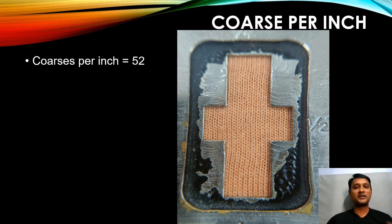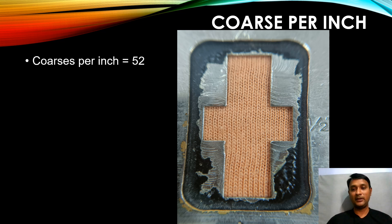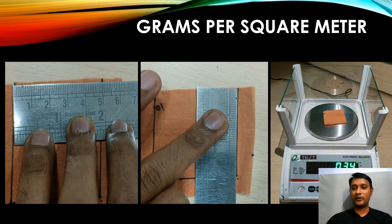The fourth parameter is courses per inch — the number of horizontal lines in one inch. Using a magnifying glass, we count the horizontal lines. This reading is also averaged across 10 different places. The average courses per inch for this fabric is 52.